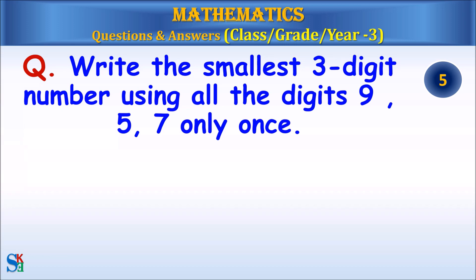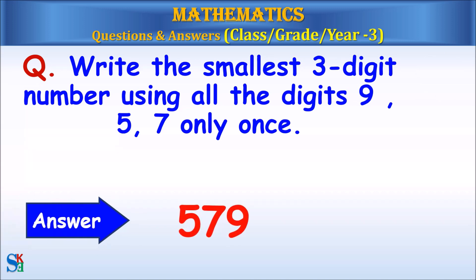Write the smallest 3-digit number using all the digits 9, 5, 7 only once. Answer: 579.